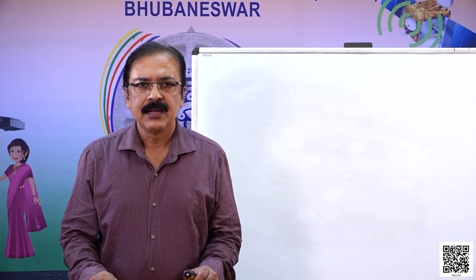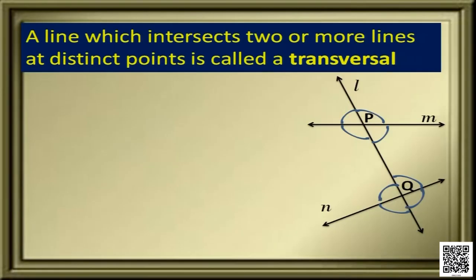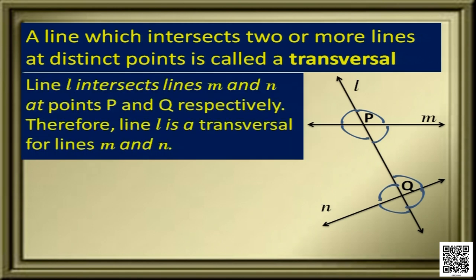What is a transversal? A line which intersects two or more lines at distinct points is called a transversal. As you see in this figure, we have a line L that intersects lines M and N at P and Q respectively. Therefore, line L is a transversal for lines M and N. With the transversal, these two lines form eight angles.